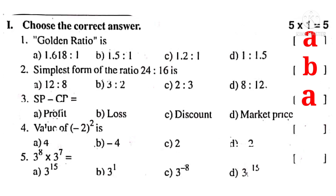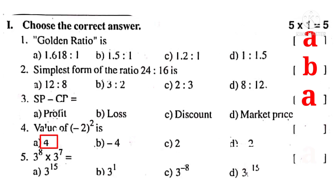Number 4: Value of (−2) whole square is equal to (−2) into (−2). Minus into minus is plus, and 2 into 2 is 4. So the correct choice is A.